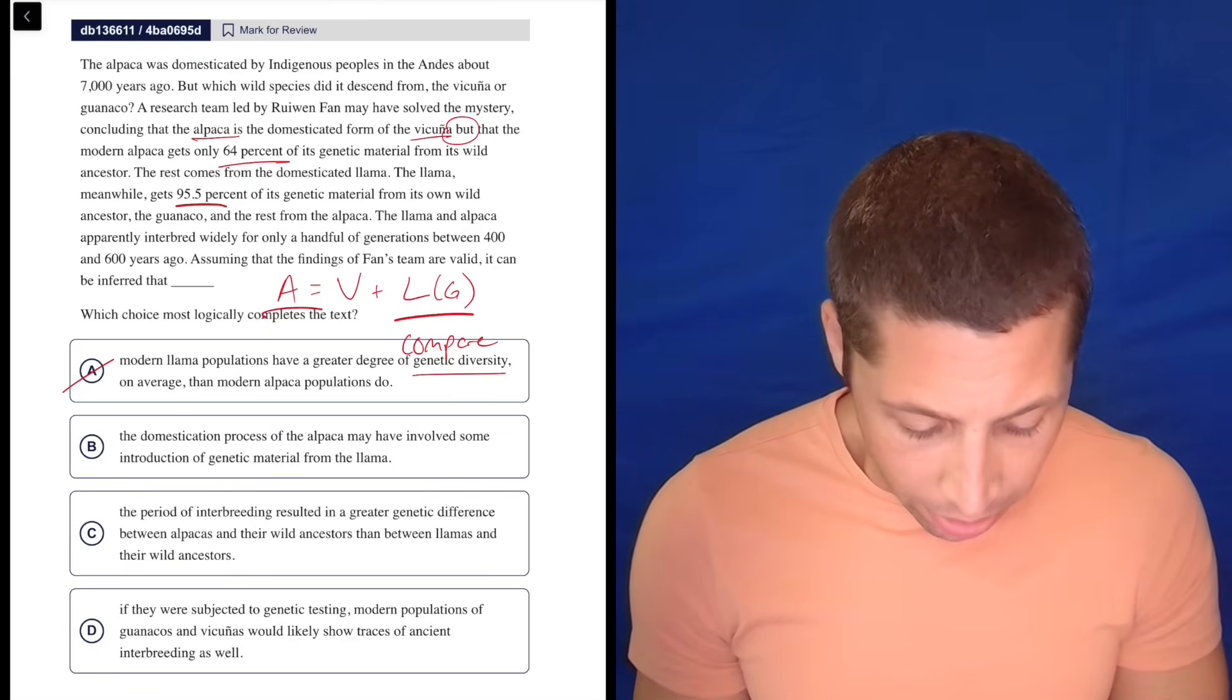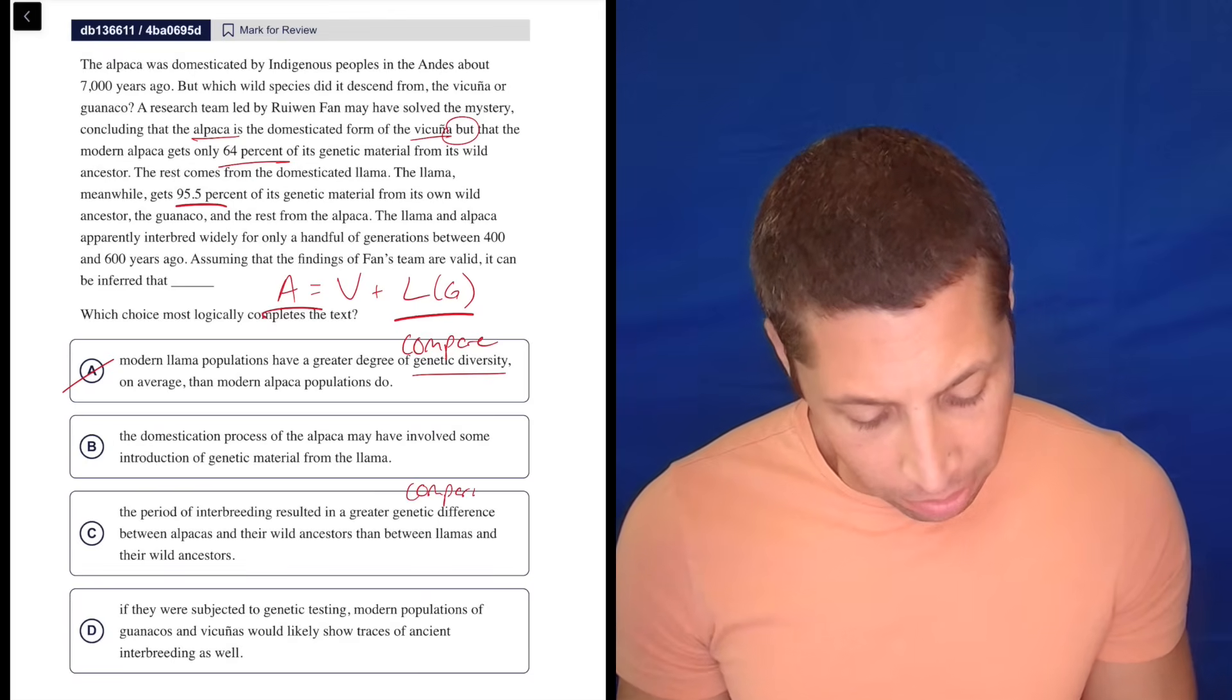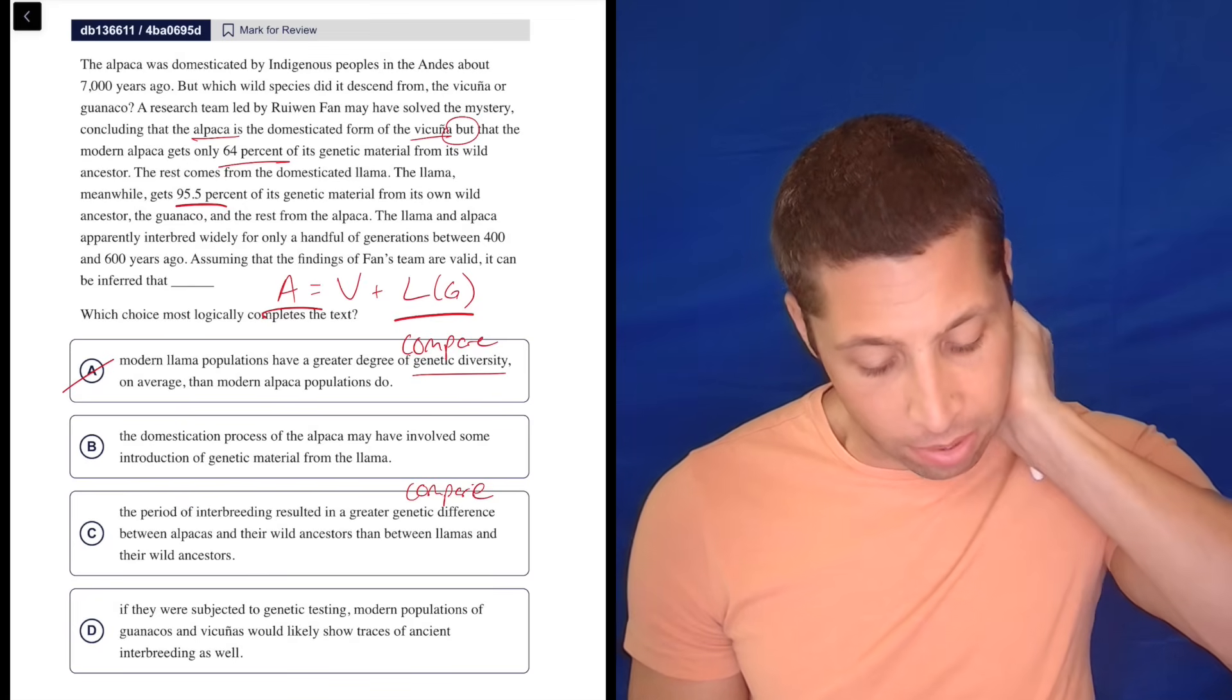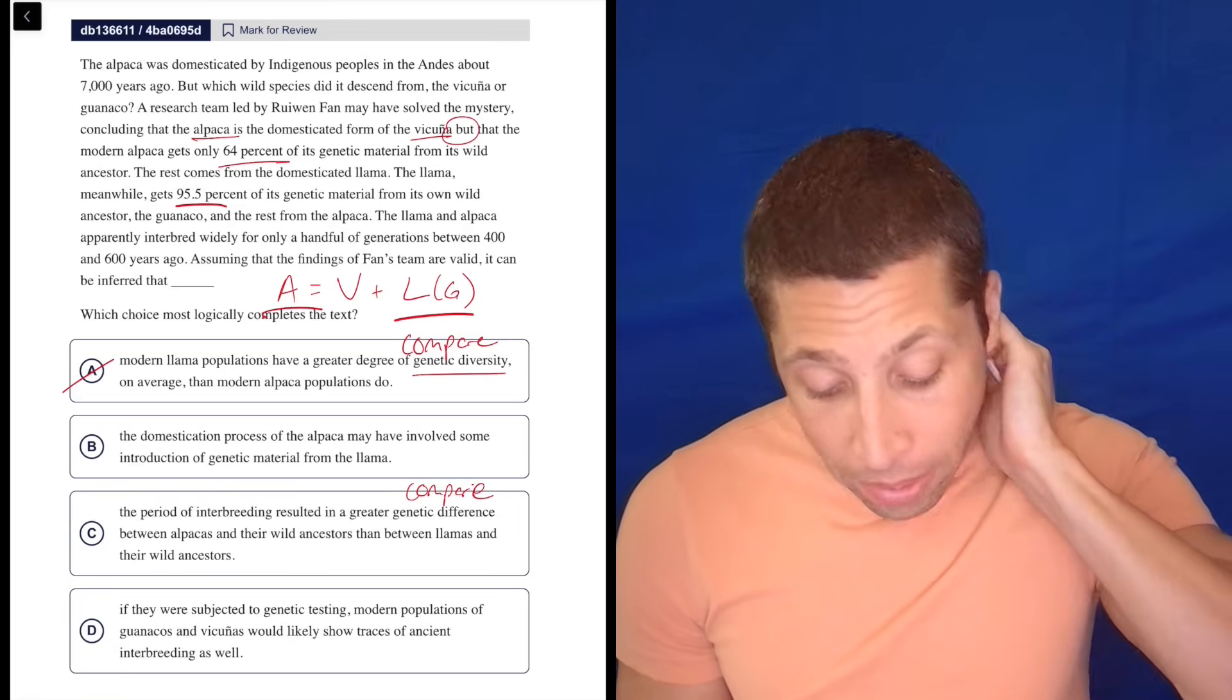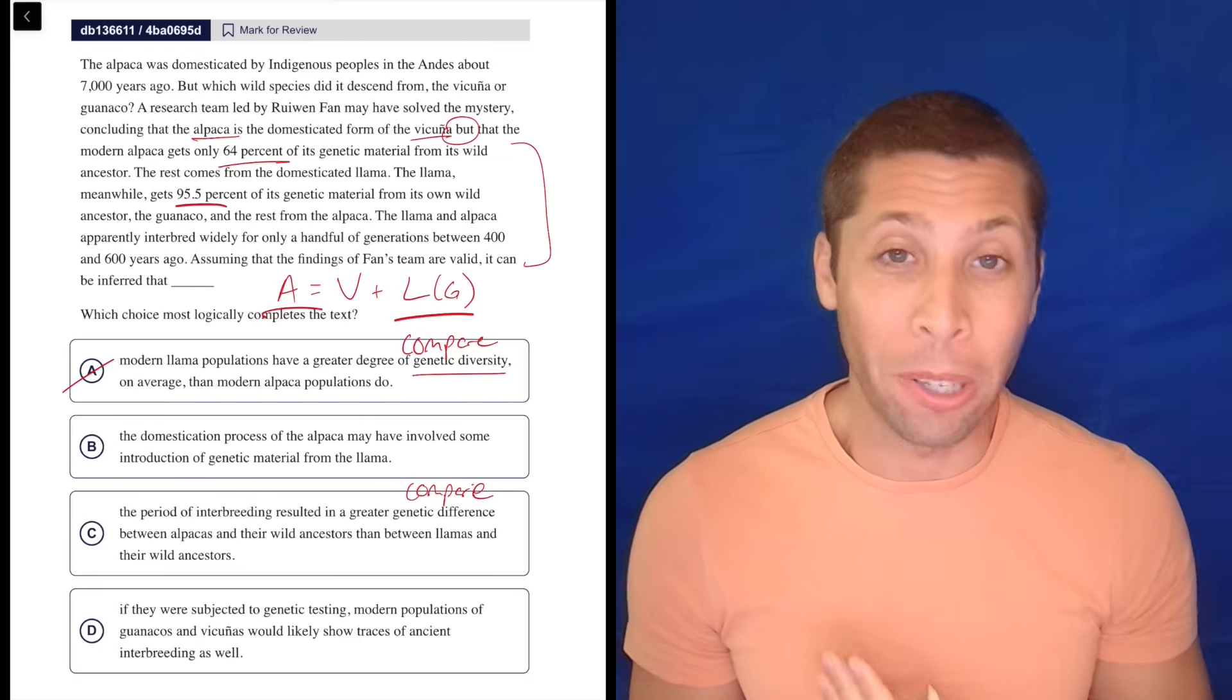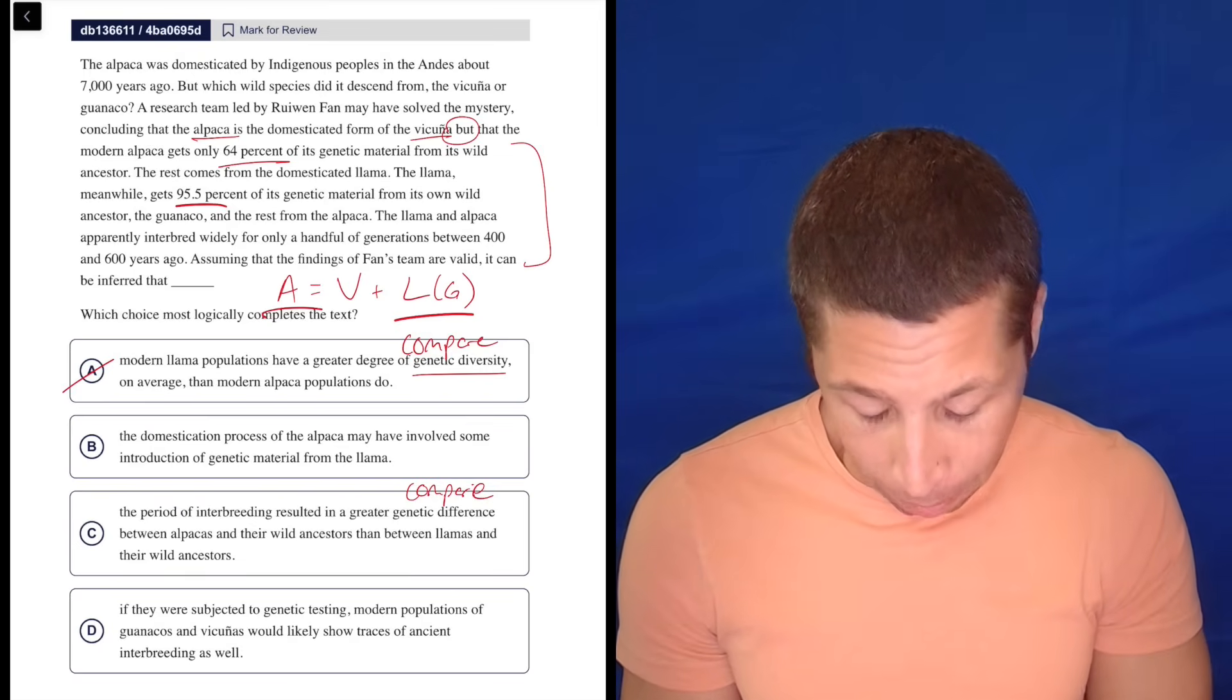C, the period of interbreeding resulted in a greater genetic difference between alpacas and their wild ancestors than between llamas and their wild ancestors. Well, again, this is like a comparison of something that I don't really care about. Maybe I don't eliminate it because it is kind of in here, focusing on that, like, where are these things from? And they're given numbers for both, right? I mean, normally quantifiers are things that I get nervous about, but this whole passage is quantifying things. So I don't know. I still don't like it, but I like B better.